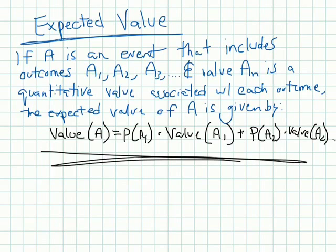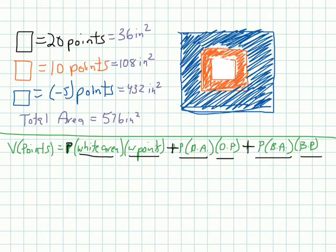This is exactly what we're using. The probability of the event times its value. The probability of the second event times the second event's value. So the white area, what's the probability of landing in the white area? Well, the probability of landing in the white area would be its area. Its area is only 36 inches squared. But the total area is 576. And that's the probability of you landing in the white area. We're going to multiply that by how many points you get, 20.